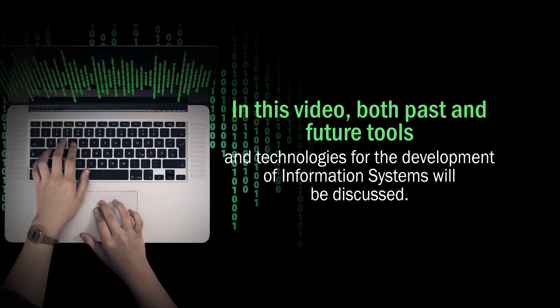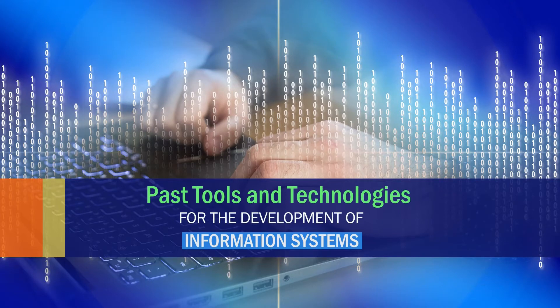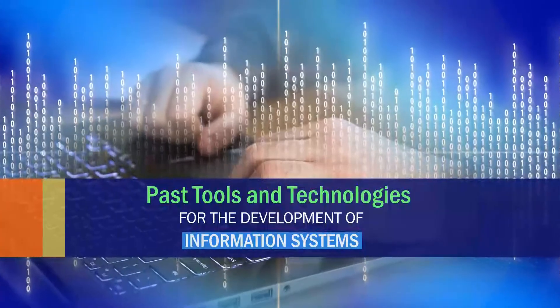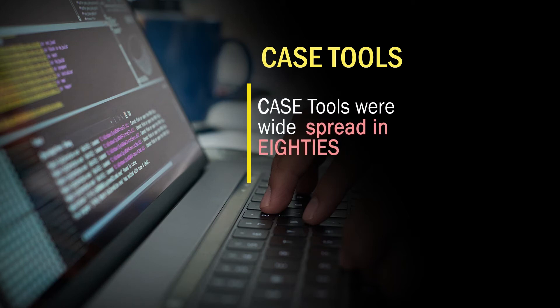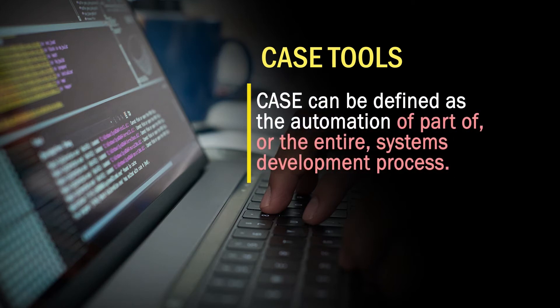Both past and future tools and technologies for the development of information systems will be discussed. During the 1980s and 90s, major software companies used to procure CASE tools. The full form of CASE is Computer-Aided Software Engineering. They were widespread in the 80s and 90s and can be defined as the automation of part of or the entire systems development process.